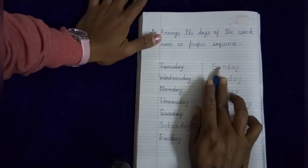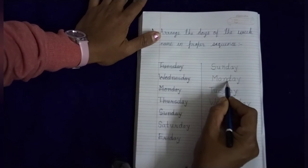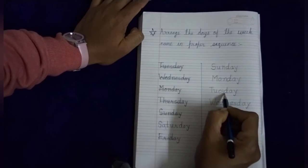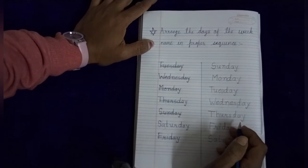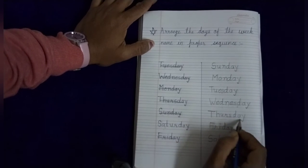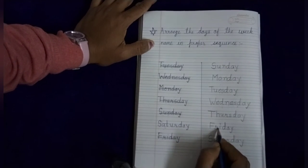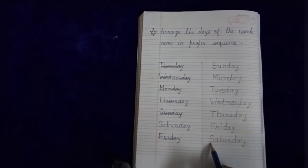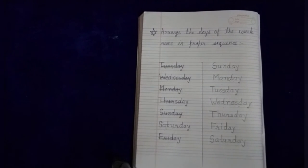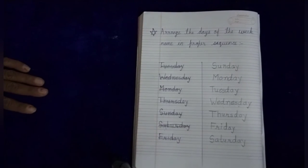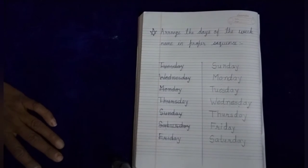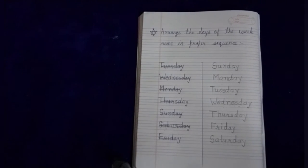So students, the first day is S-U-N-D-A-Y, Sunday. M-O-N-D-A-Y, Monday. T-U-E-S-D-A-Y, Tuesday. W-E-D-N-E-S-D-A-Y, Wednesday. T-H-U-R-S-D-A-Y, Thursday. F-R-I-D-A-Y, Friday. S-A-T-U-R-D-A-Y, Saturday. Now we have completed our days of the week. We have revised the topic of our days of the week. Thank you.